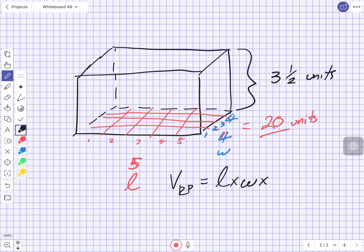We know that the volume of a rectangular prism equals length times width times height. But they've told us 20. What is 20? It's the length and the width multiplied together. They've done that multiplication for us already. So 20 replaces both of those letters, and it's 20 times 3.5 units.